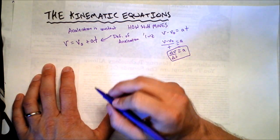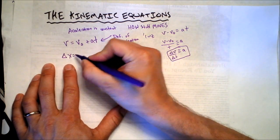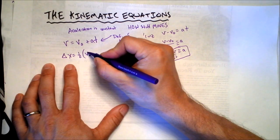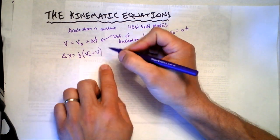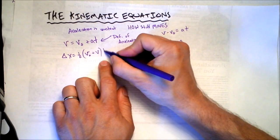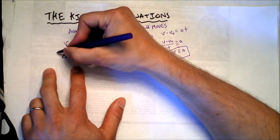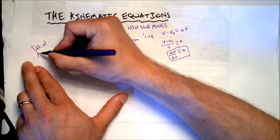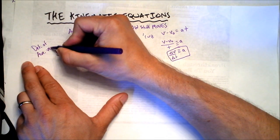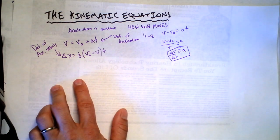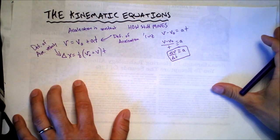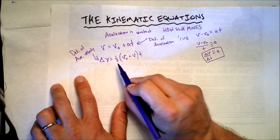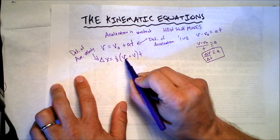It says delta x equals one half your starting velocity plus your velocity right now times how long you've been going. The reason I call this the definition of average velocity is, we'll need a little bit more space. The definition of average velocity.